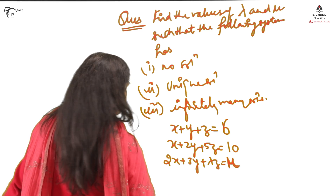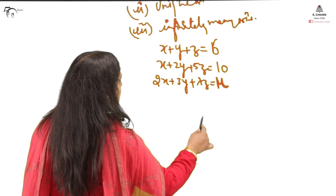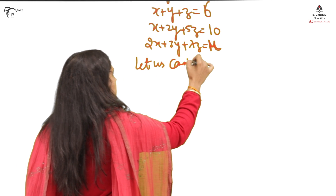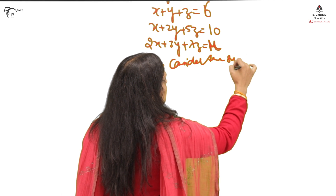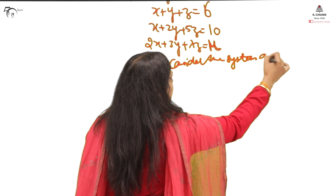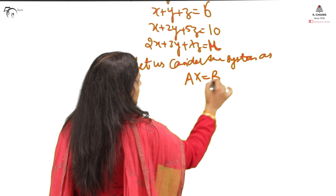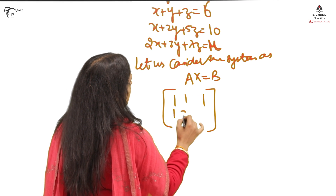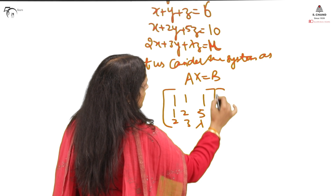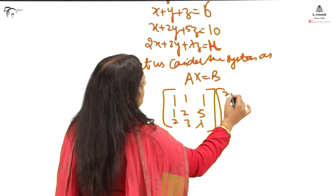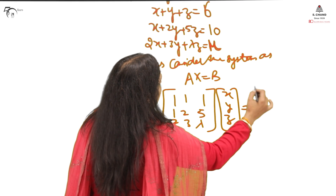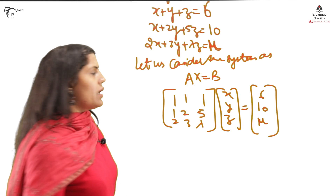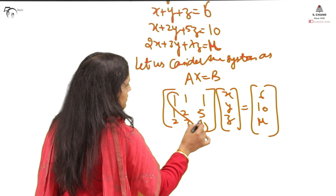The very first step is to write the system in the form AX = B. The coefficient matrix A is [1 1 1; 1 2 5; 2 3 λ], X is the unknowns matrix, and B is [6; 10; μ]. The first step is to make all below-diagonal elements zero.